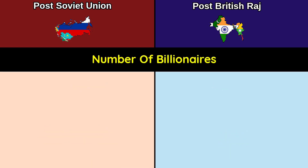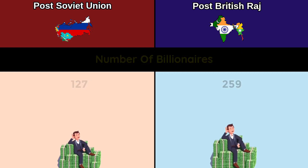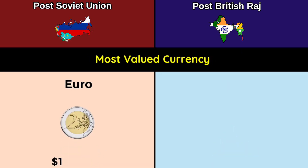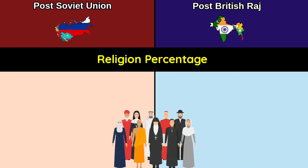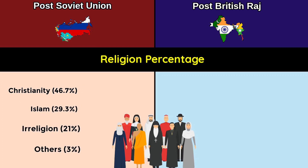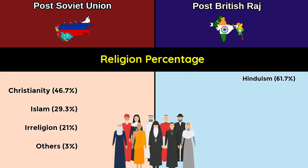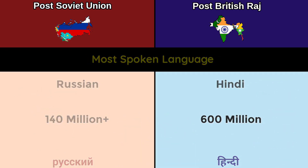Number of billionaires: 127 versus 259. Most valued currency: Euro — 1 dollar equals 1.02 Euro; Indian Rupee — 1 dollar equals 82.69 Rupees. Religion: Christianity dominates post-Soviet Union, followed by Islam; Hinduism dominates post-British Raj, followed by Islam. Most spoken language: Russian, with more than 140 million speakers, versus Hindi with 600 million speakers.